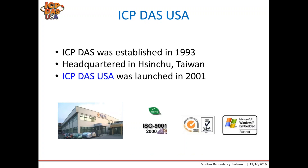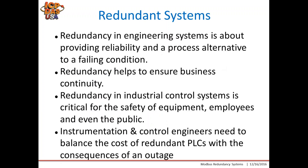ICP-DOS was established in 1993. Our headquarters is in Xinchu, Taiwan. ICP-DOS USA was launched in 2001 to support the North and South American markets. Our company is ISO 9001 and RoHS compliant, which means our products are lead free. We're also a Microsoft embedded partner, and our products meet statutory and regulatory requirements.